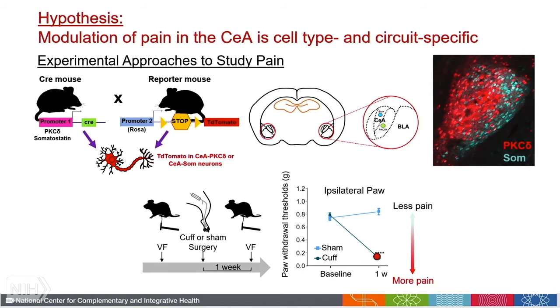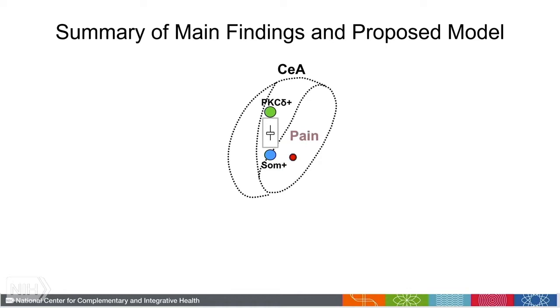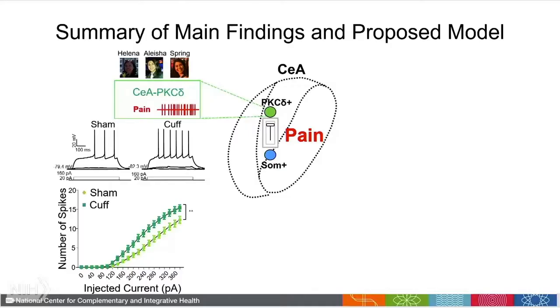Using these approaches, what we have found is that the central amygdala functions as a pain rheostat that can turn pain up and down depending on different conditions. The mechanism by which this happens is through selective modulation of the excitability of these cells.